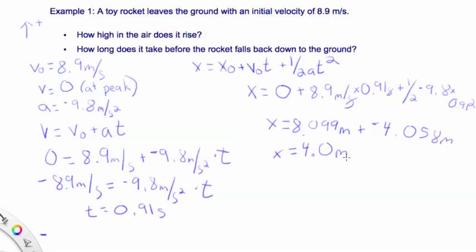The second question is how long does it take before the rocket falls back to the ground? We know it takes 0.91 seconds to get up. The values for the trip down — acceleration, initial velocity at peak, and displacement — are the exact same magnitudes, just opposite signs. So it always takes the same amount of time to come down as it took to go up. For the second question, we just do 0.91 times 2, and it is in the air 1.8 seconds.